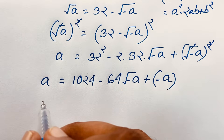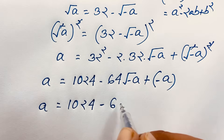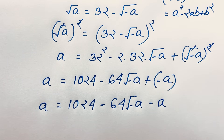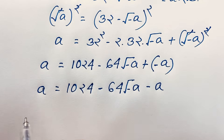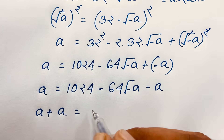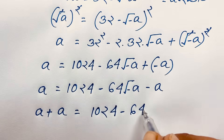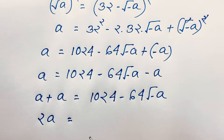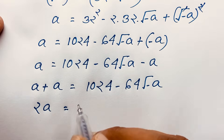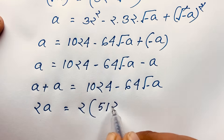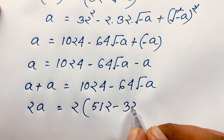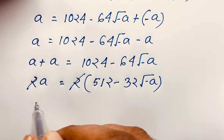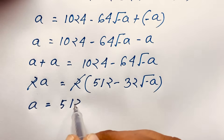So we have: a = 1024 minus 64 times square root of negative a, minus a. I move the negative a to the left side, making it positive: a plus a equals 1024 minus 64 square root of negative a. That gives 2a = 1024 minus 64 square root of negative a. Dividing both sides by 2: a = 512 minus 32 square root of negative a.